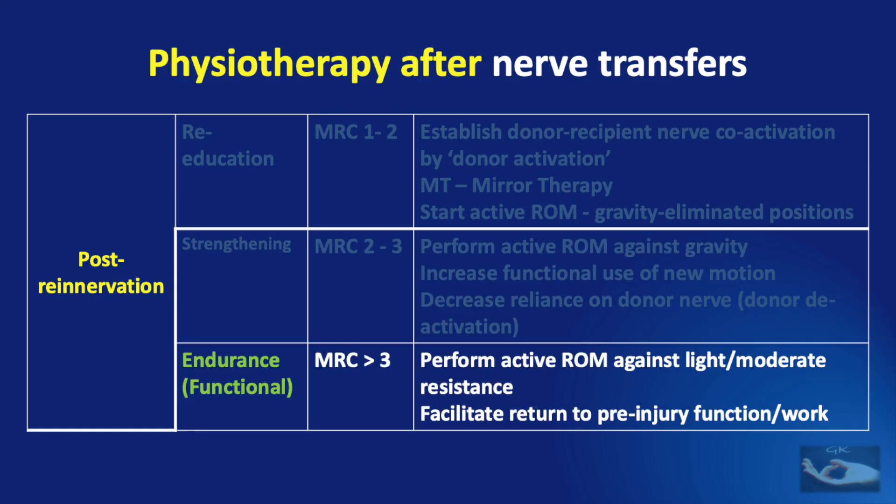The final phase after re-innervation of the muscle is the endurance phase or the functional phase. The aim is to increase the MRC grading to more than 3. The patient is encouraged to perform active ROM exercises against light or moderate resistance and also exercises which can facilitate return to pre-injury function or work.